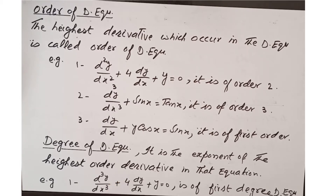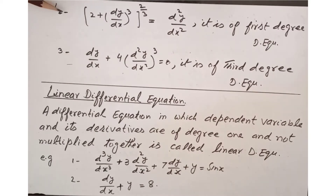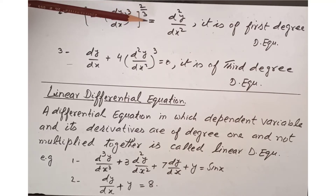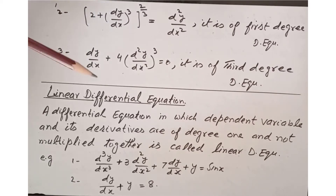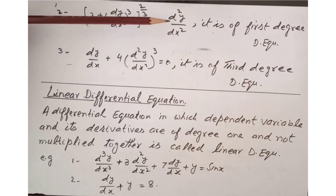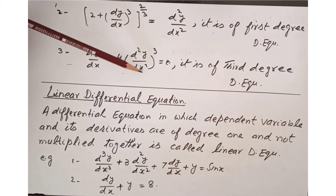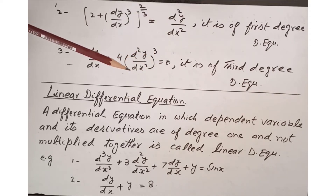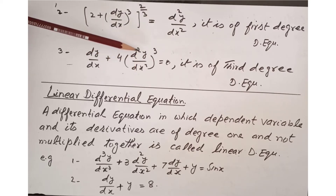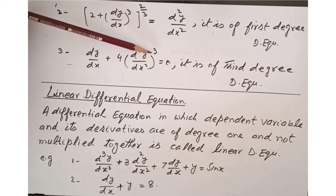In the second example, [2 + (dy/dx)³]^(2/3) equals d²y over dx², it is of first degree because the highest order derivative is 2 and its whole power is 1. In the third example, (d²y/dx²)³ equals 0 is of third degree, because the highest order derivative is d²y/dx² and its whole power is 3. So the degree of this differential equation is 3.